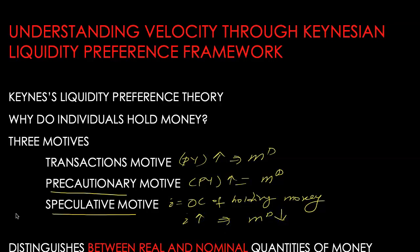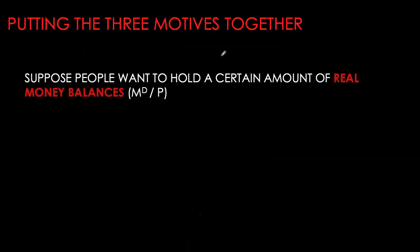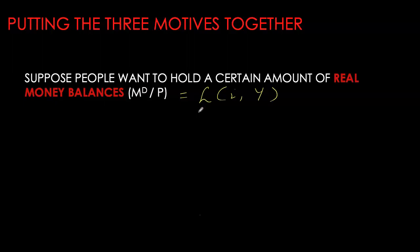The Keynesian perspective also distinguishes between real and nominal money balances. Bringing the three motives together, we can write the demand curve for real money balances as a function of nominal interest rates and real GDP, where L represents liquidity — money is the most liquid asset. That is where the name 'liquidity preference framework' comes from.